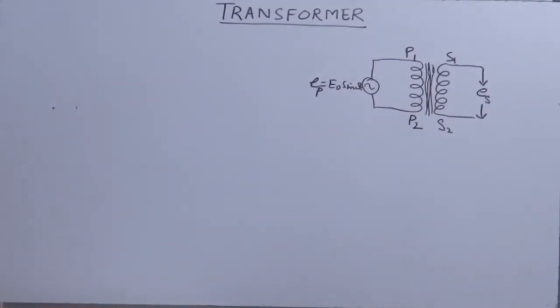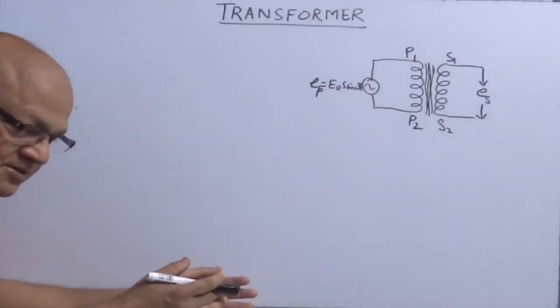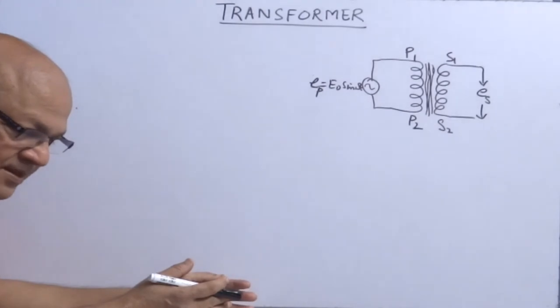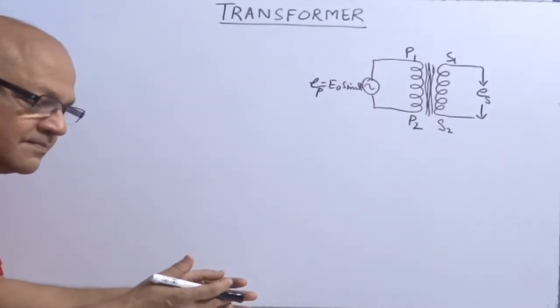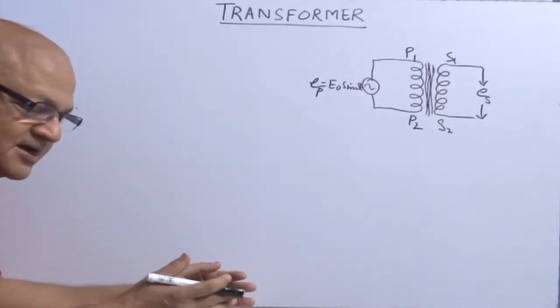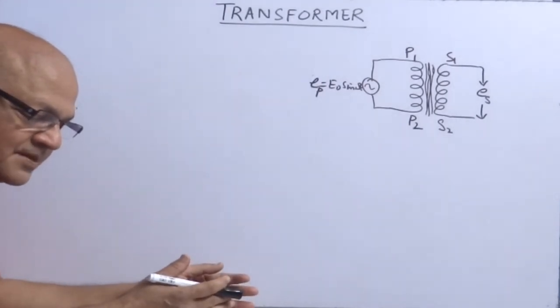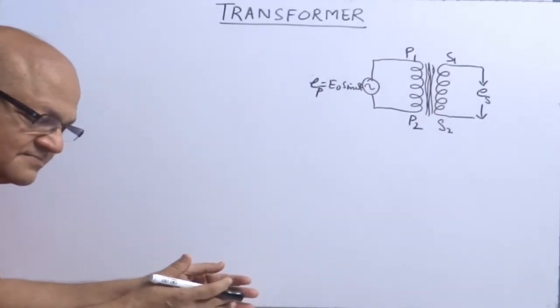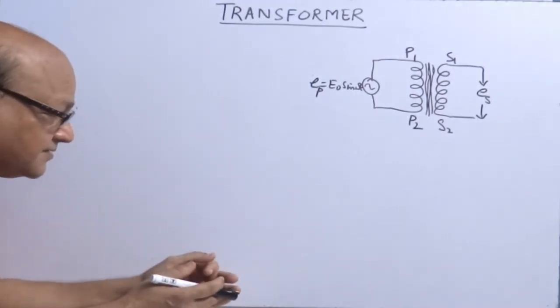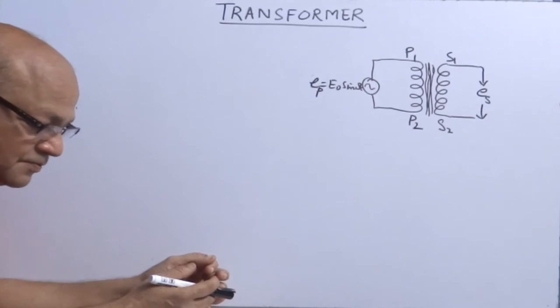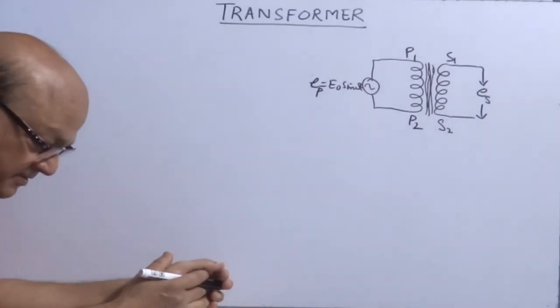That's what is the principle and working of transformer. So if somebody asked only principle, then you should write: the working of transformer is based on mutual induction. That is, whenever time varying current is passed through the first coil, the magnetic flux linked with the second coil or secondary coil changes. Therefore it induces an EMF. As a result, EMF which is obtained at output can be used for any other purposes.